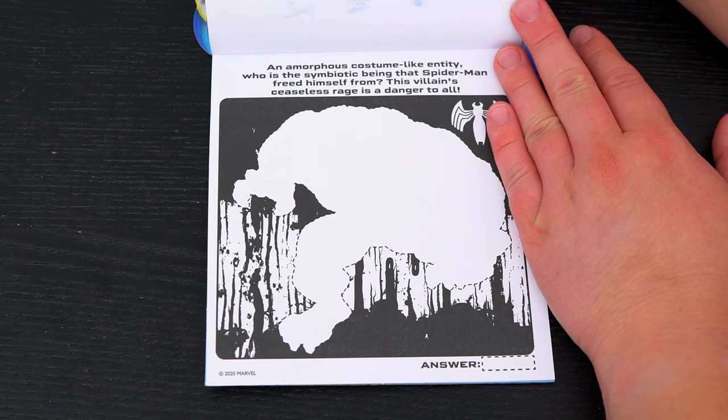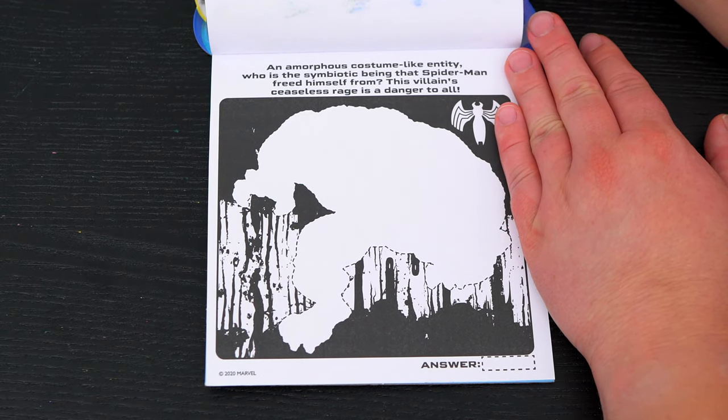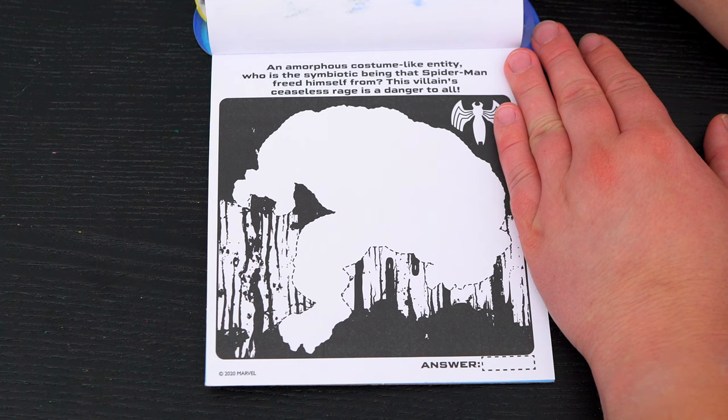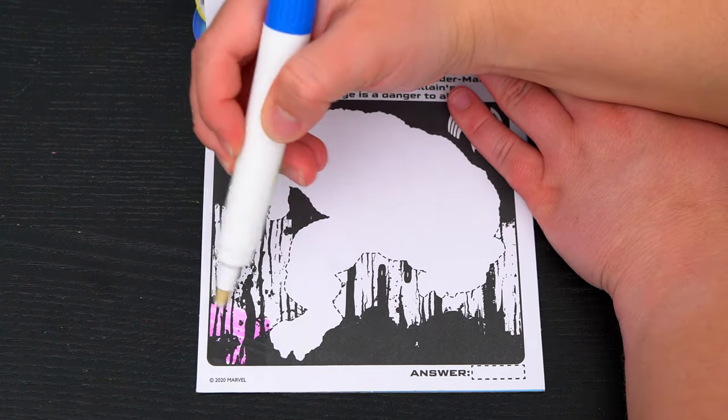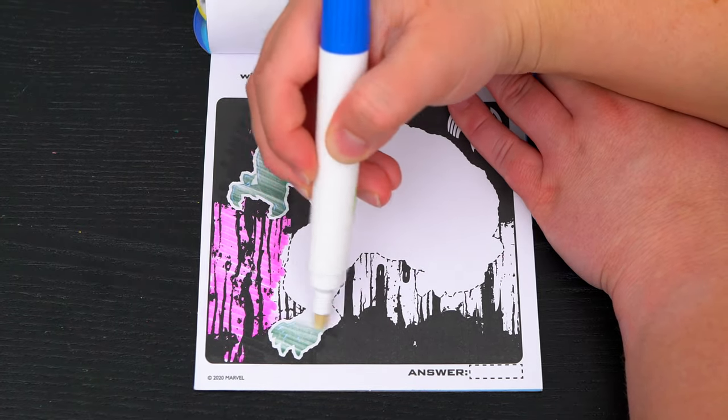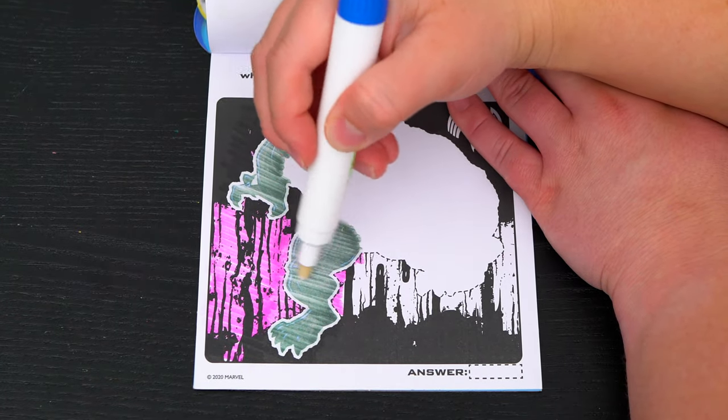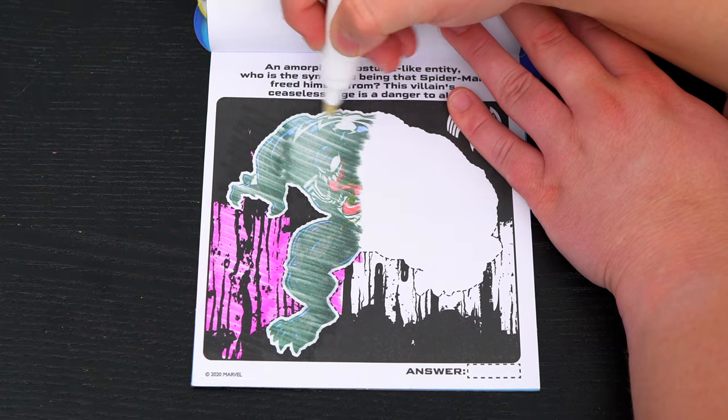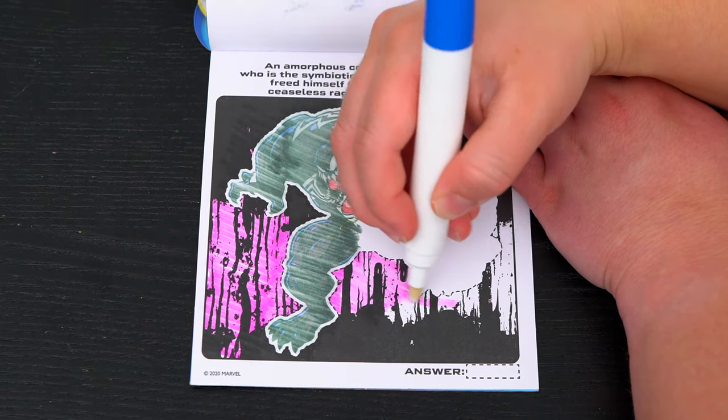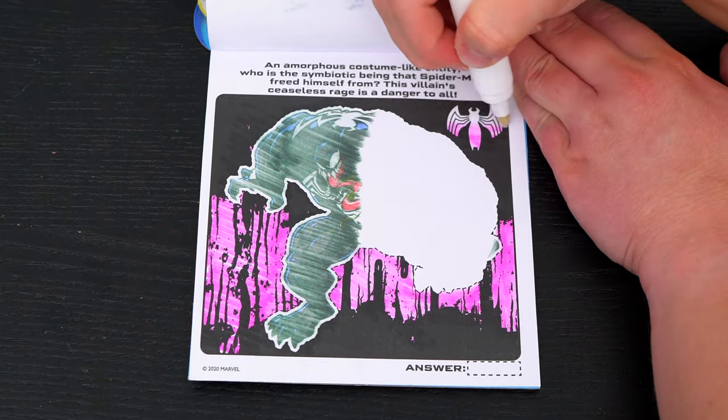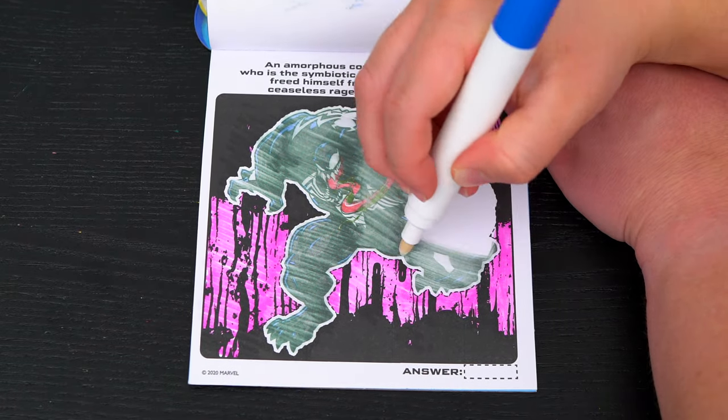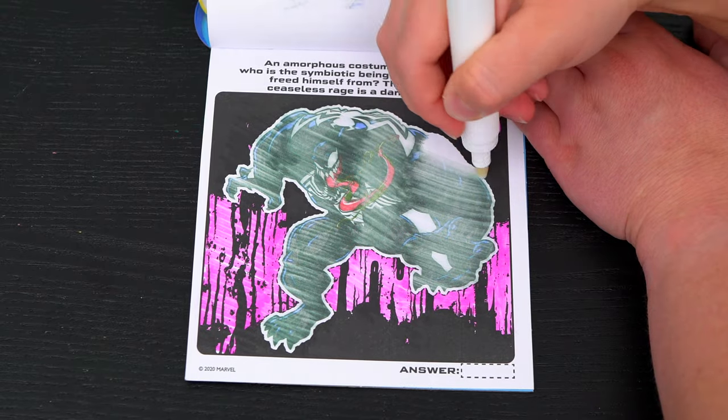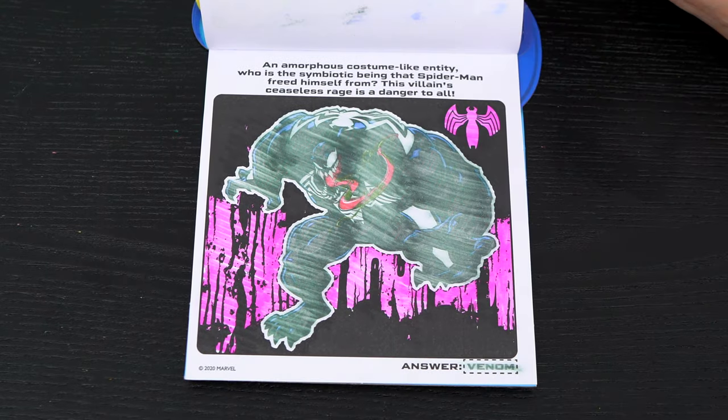An amorphous costume-like entity. Who is the symbiotic being that Spider-Man freed himself from? This villain's ceaseless rage is a danger to all. It's Venom!